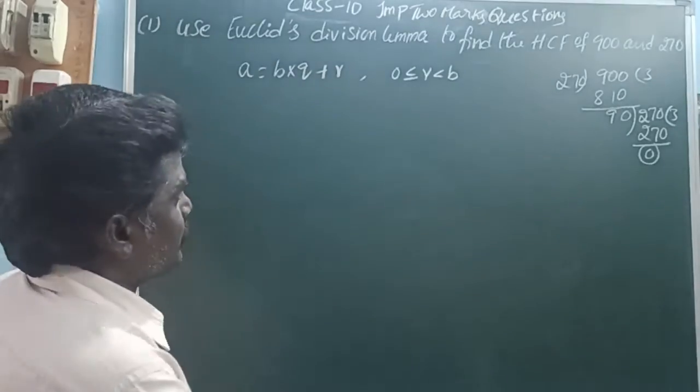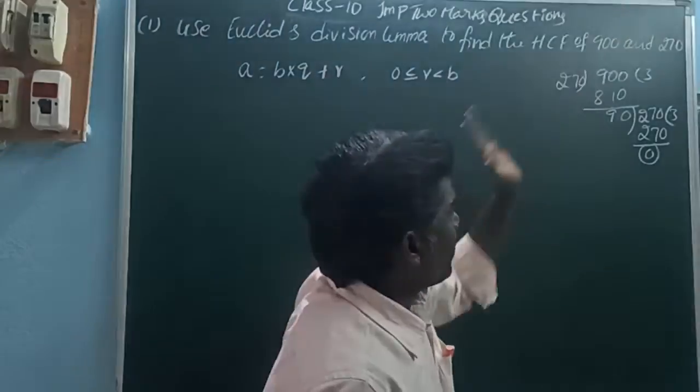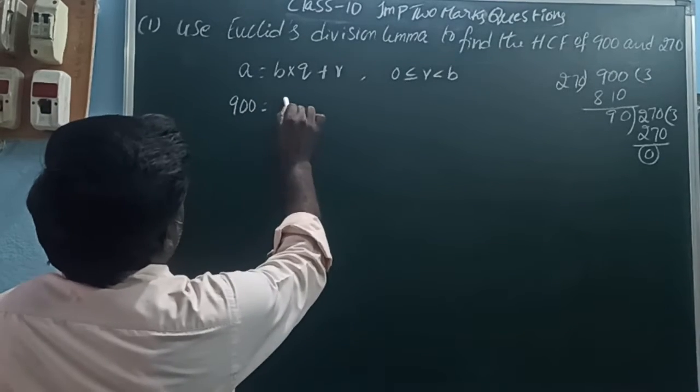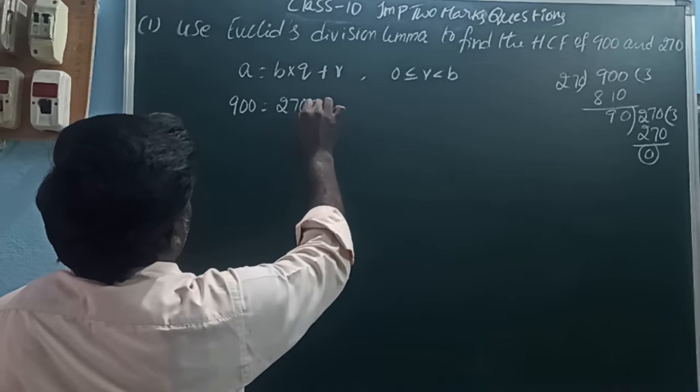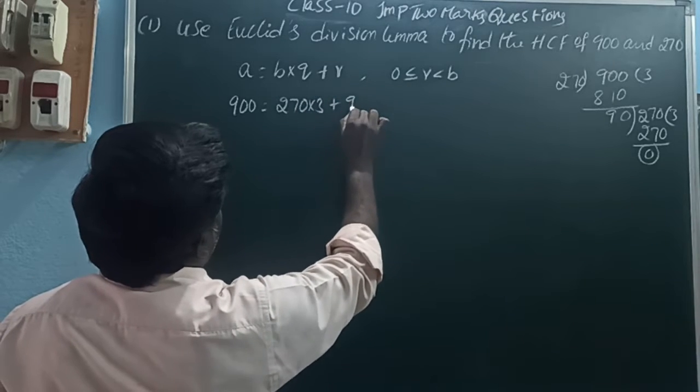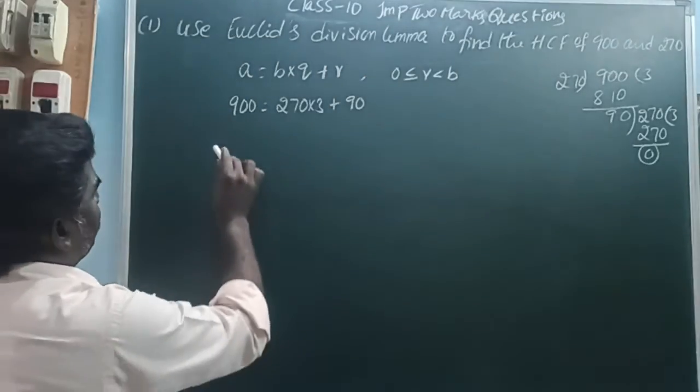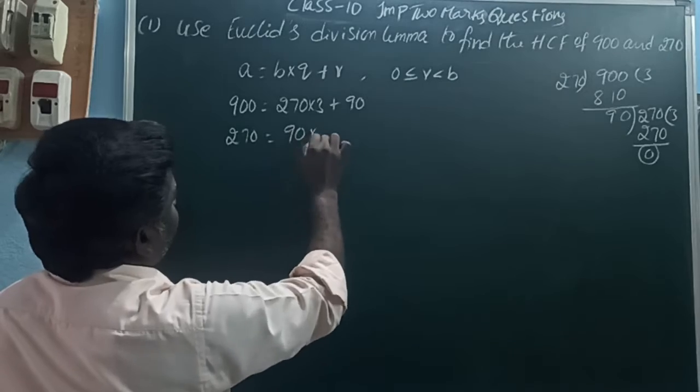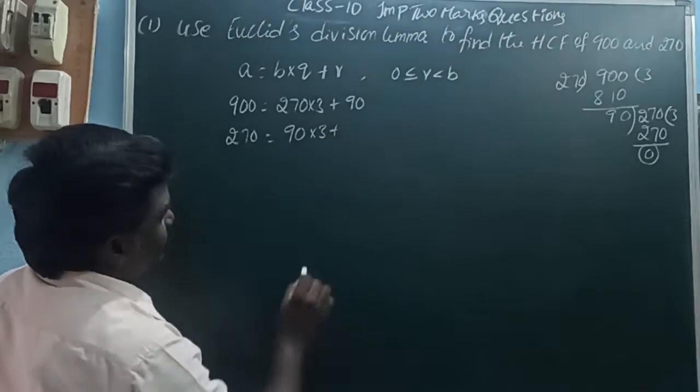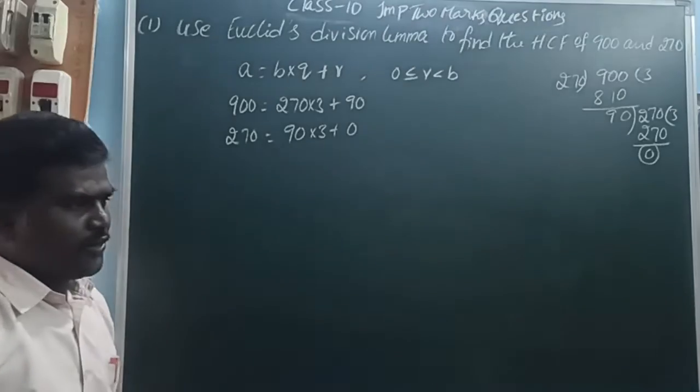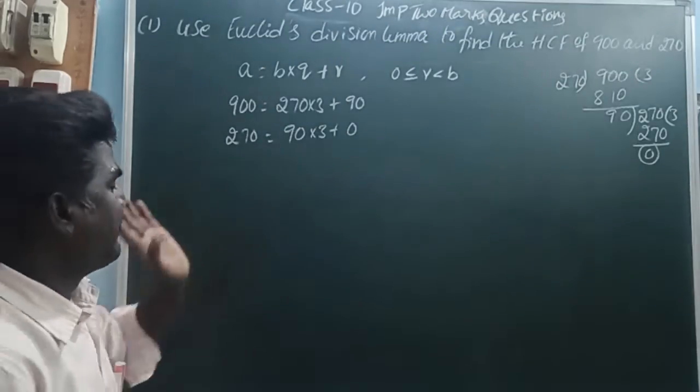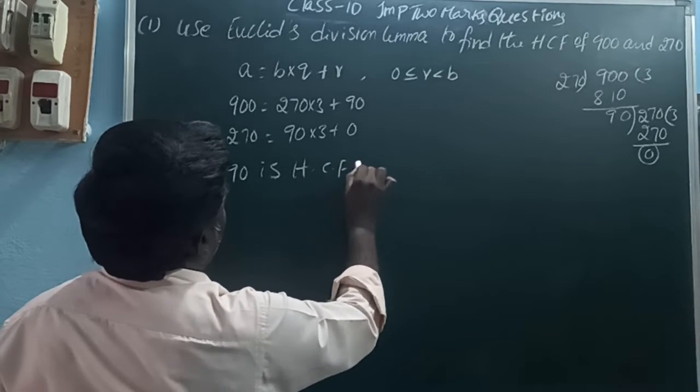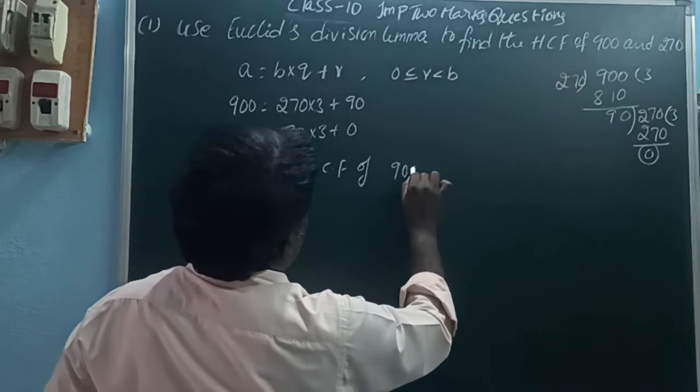So here, we divide two times. First division: 900 (dividend) = 270 (divisor) × 3 + 90 (remainder). In the second division: 270 (dividend) = 90 (divisor) × 3 + 0 (remainder). Where we get remainder 0, that is 90. Therefore, 90 is the HCF of 900 and 270.